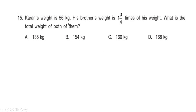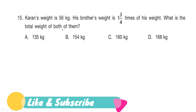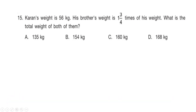Next question: Karan's weight is 56 kg. His brother's weight is 1¾ times his weight. What is the total weight of both of them? Is it option A: 135 kg, option B: 154 kg, option C: 160 kg, or option D: 168 kg? Your time starts now.